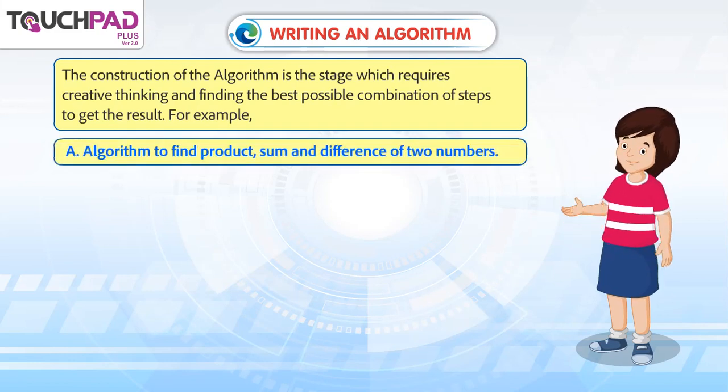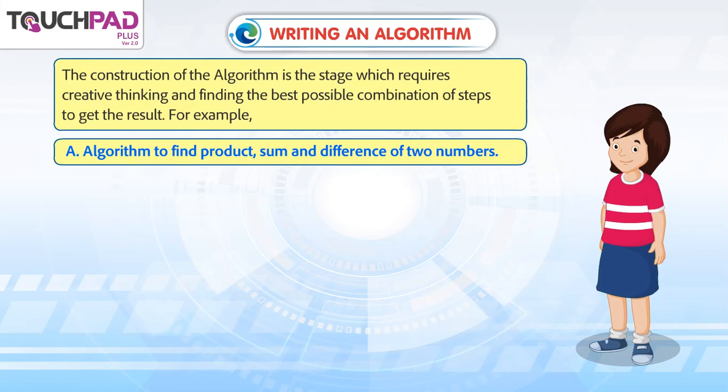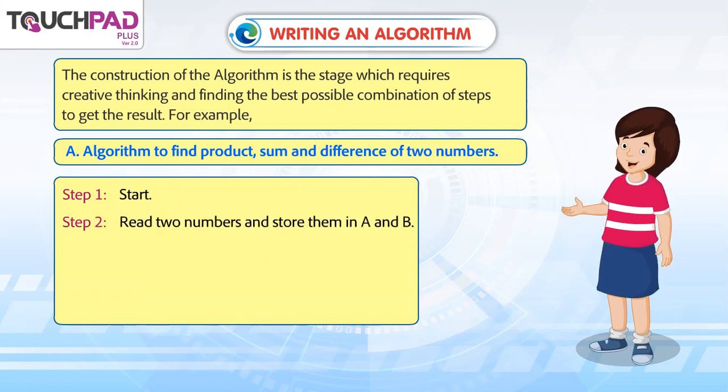A. Algorithm to find product, sum and difference of two numbers. Step 1: Start. Step 2: Read two numbers and store them in A and B.